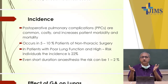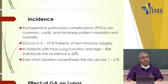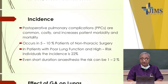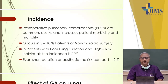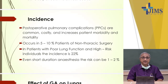In thoracic surgery, the lung is involved because it is handled by the surgeon. But in non-thoracic surgery, neither the lungs nor the heart are touched, yet the incidence is as high as 5% to 10%. In patients with poor lung function and high-risk patients, the incidence can be as high as 22%. Even in very short duration GA, the risk is 1% to 2%, so no one is above risk under general anesthesia.